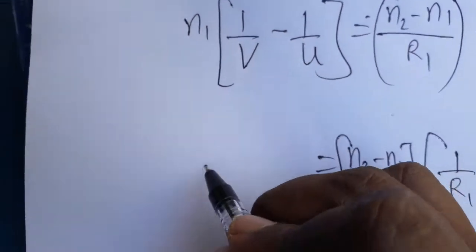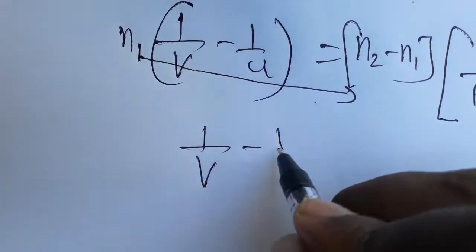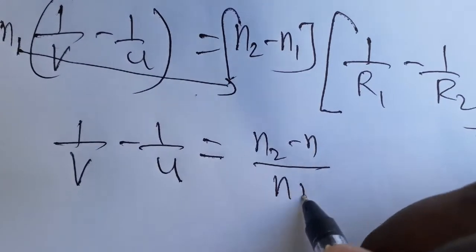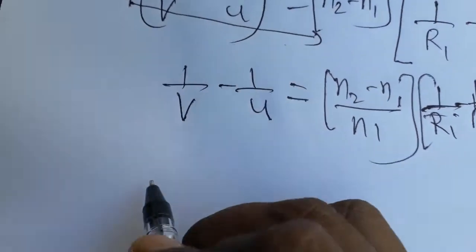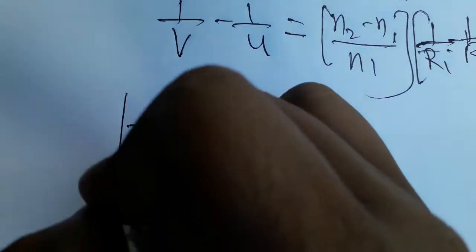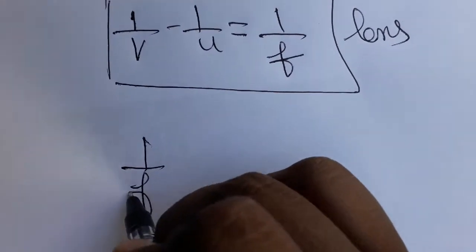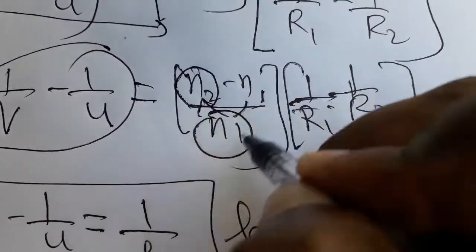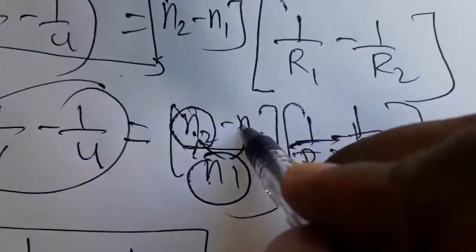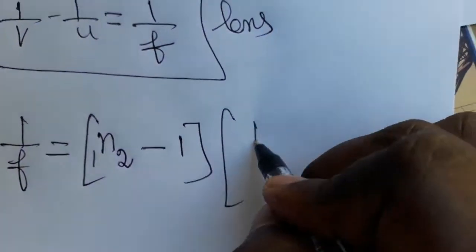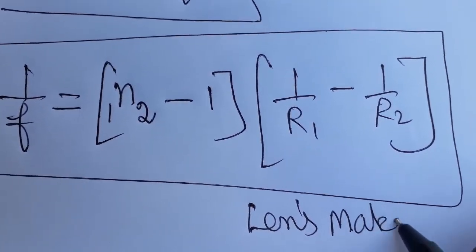Bringing n1 to the right side by cross multiplication: 1/v − 1/u = (n2 − n1)/n1 × (1/R1 − 1/R2). Since 1/v − 1/u = 1/f from the lens formula, we get the final lens maker formula: 1/f = (n2/n1 − 1)(1/R1 − 1/R2), where n2/n1 is the refractive index of the second medium with respect to the first medium. This is the lens maker formula.